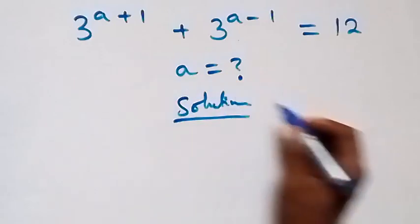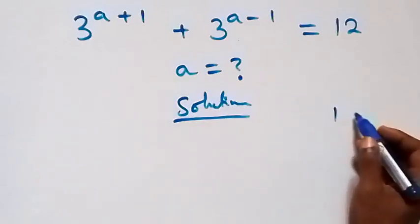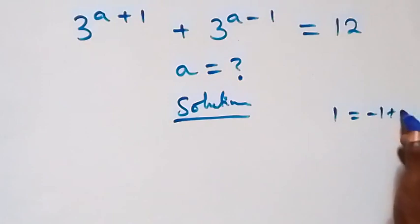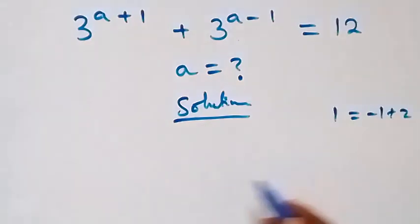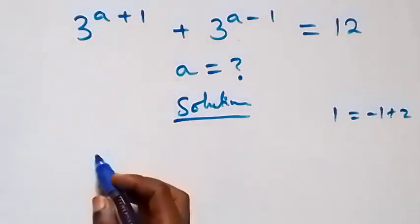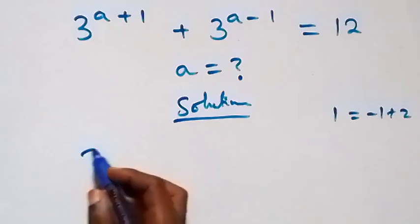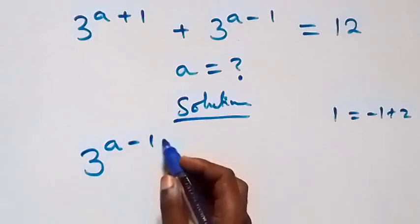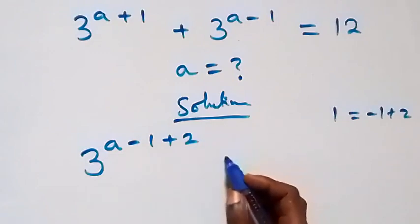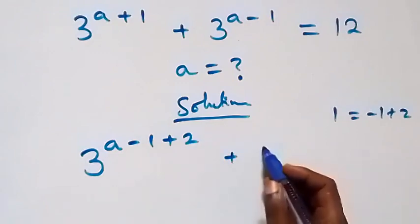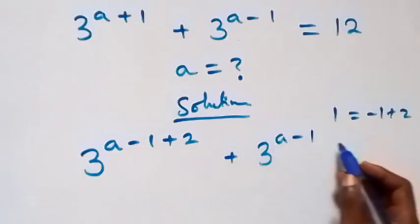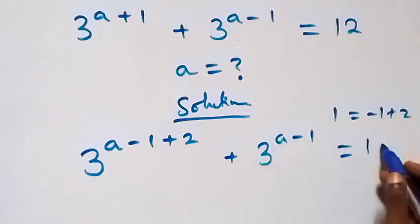From here, we can write 1 as minus 1 plus 2. That is, what we have here can be written as 3 raised to power a minus 1 plus 2, then plus 3 raised to power a minus 1, which equals 12 on this side.